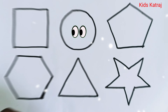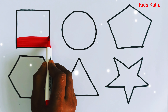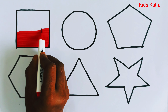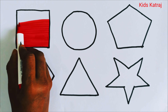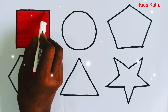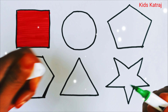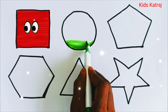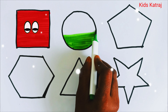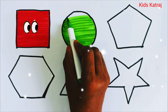Let's color it. Red color — square. Light green color — circle.